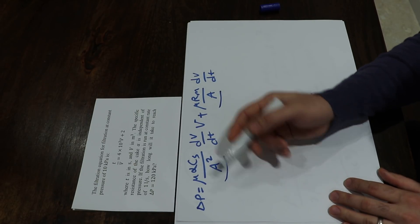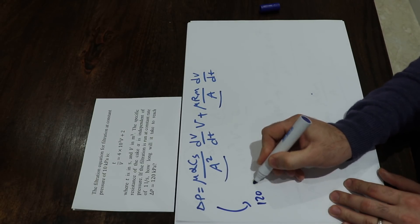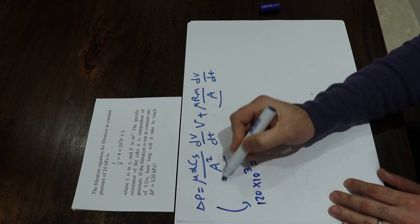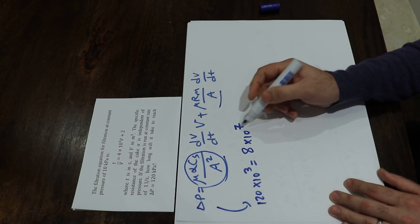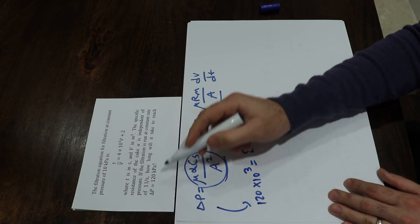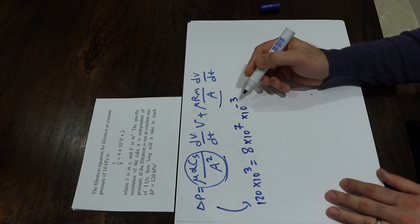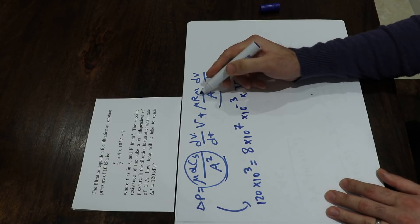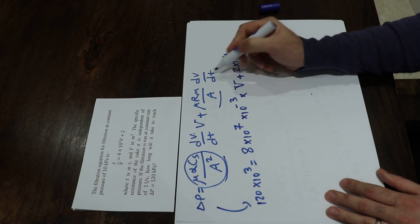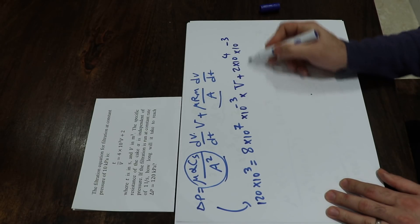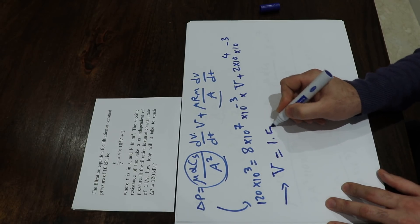Setting delta P equal to 120 kilopascal, substituting 8 times 10 to the power of 7 for mu alpha cs over a², and dV/dt equal to 1 liter per second, which is 10 to the minus 3 cubic meters per second, plus 2 times 10 to the power of 4 times 10 to the minus 3 for the second term. Solving this equation gives V equal to 1.5 cubic meters.